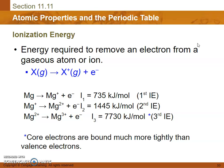Ionization energy is the energy required to remove an electron from a gaseous atom or ion. So the first electron that you remove from a metal is generally pretty easy.